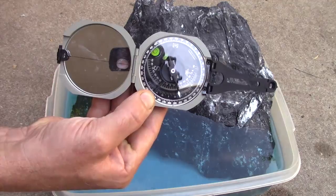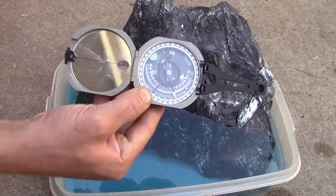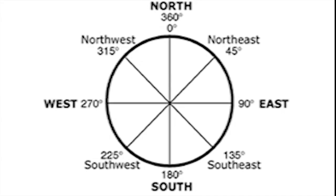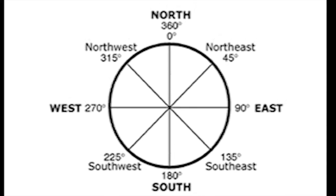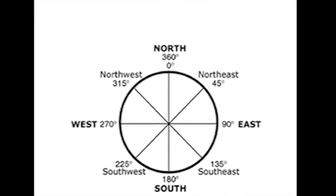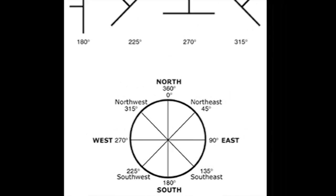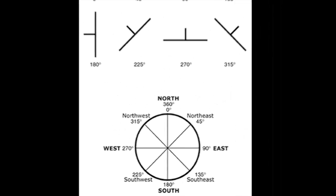At the Colorado School of Mines we teach our students to prefer use of the azimuth system. This is the system that goes from 0 to 360 around the compass rose. North is 0 degrees, east is 90, south is 180, west is 270 degrees.